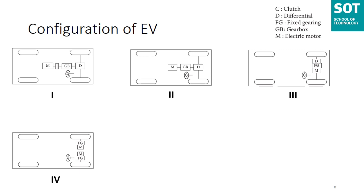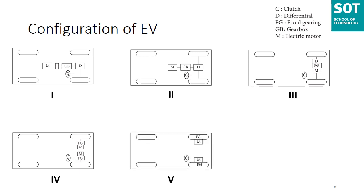In configuration four, the mechanical differential is replaced by using two traction motors — each driving one side wheel and operating at different speeds when the vehicle runs along a curved path. In configuration five, the traction motor is placed inside a wheel — the so-called in-wheel drive. A thin planetary gear set may be employed to reduce motor speed and enhance motor torque, offering a high speed-reduction ratio as well as an inline arrangement of the input and output shafts.